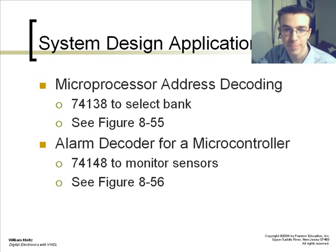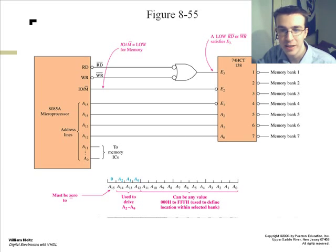Some system design applications using these decoders and multiplexers are microprocessor address decoding. You use the 74138 to select bank. This means you have, like, eight memory banks, and you wish to select one.